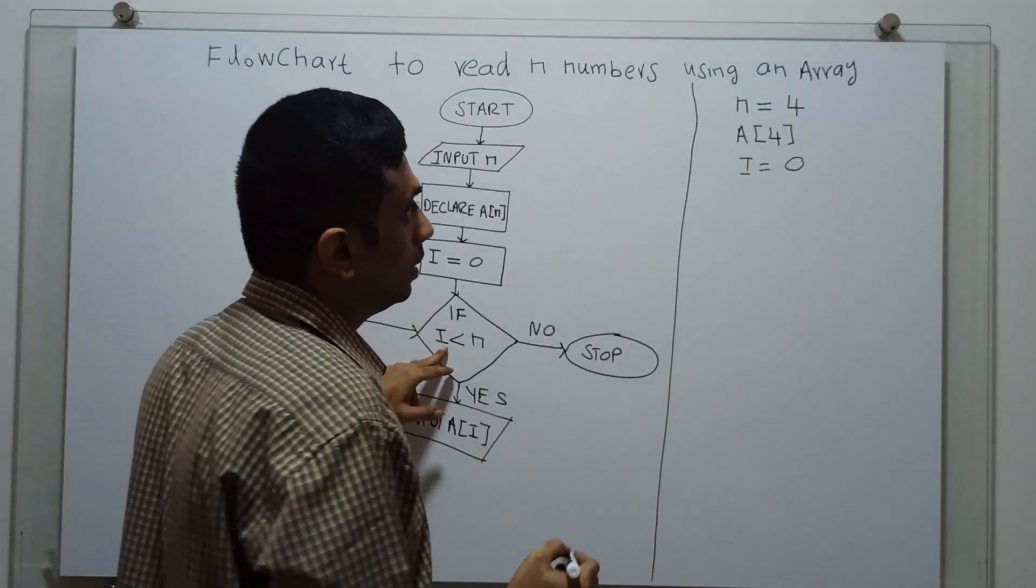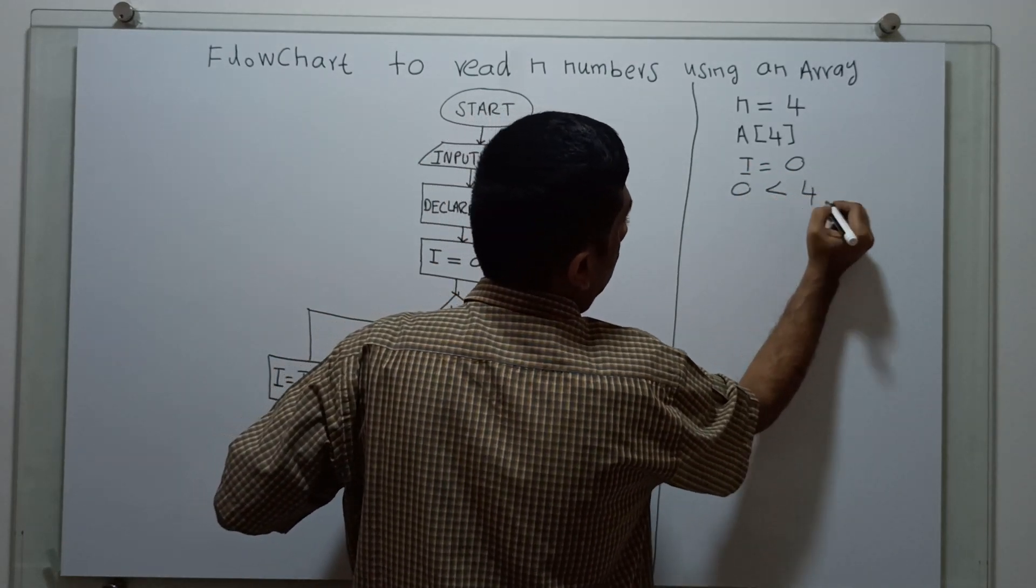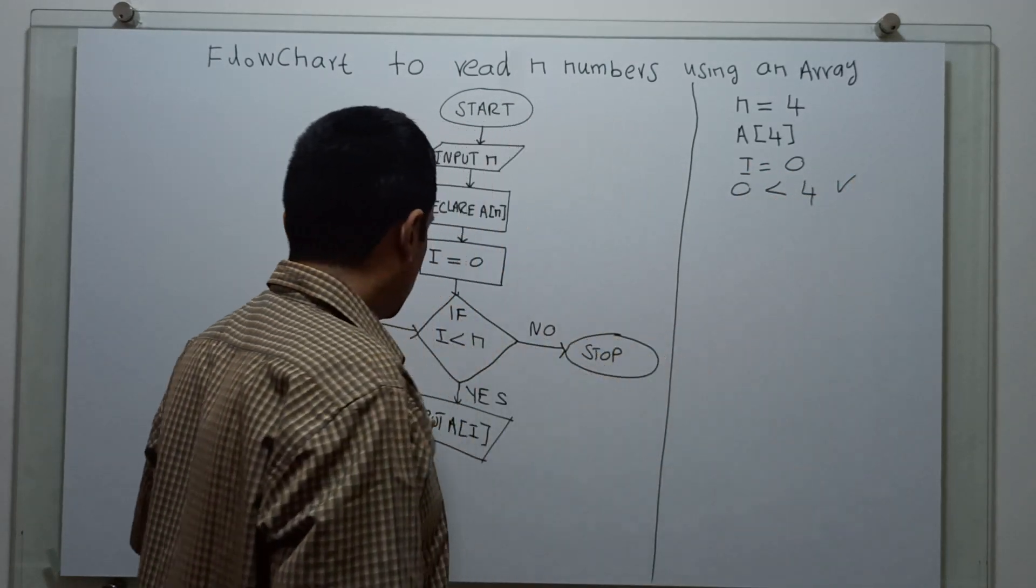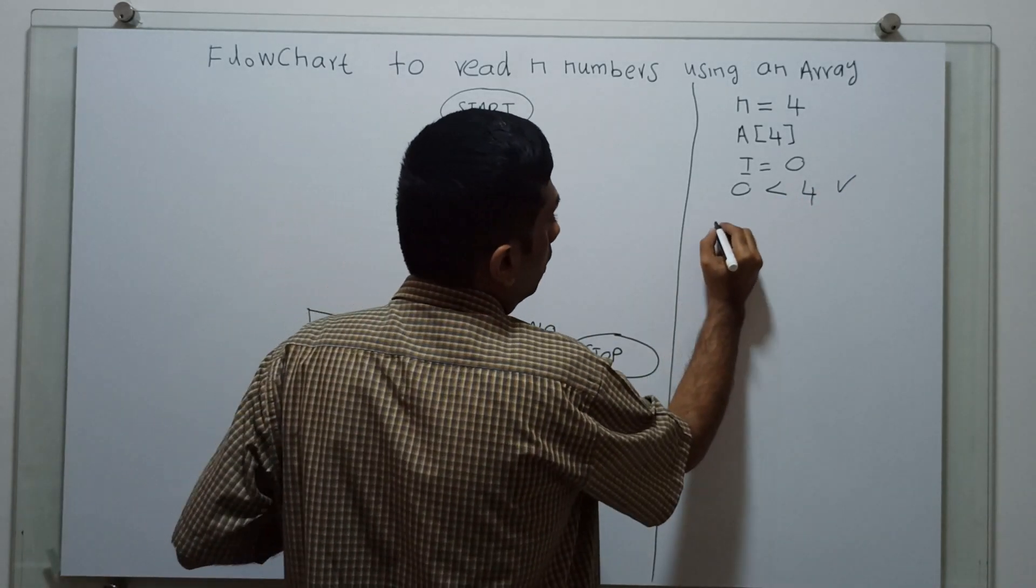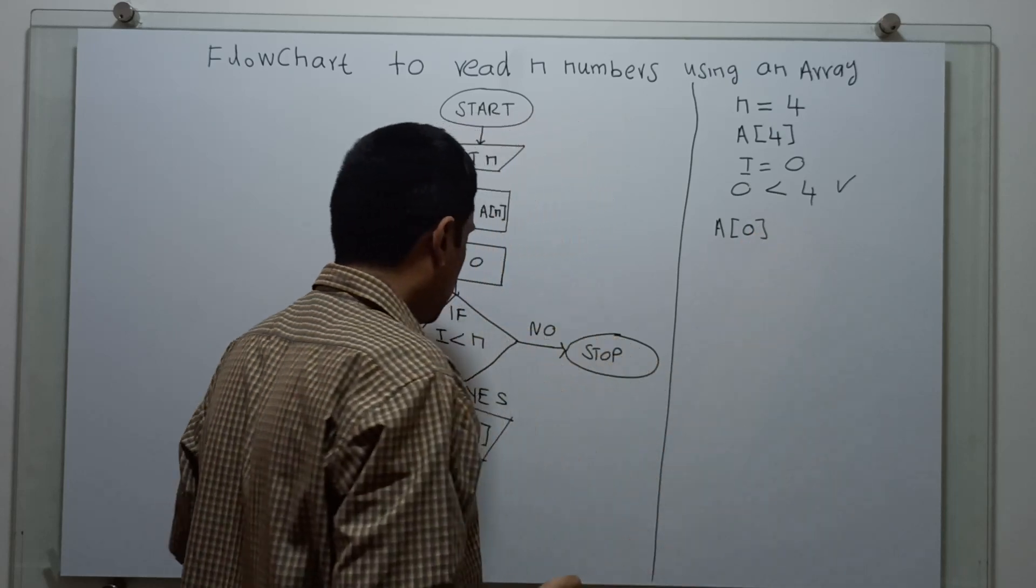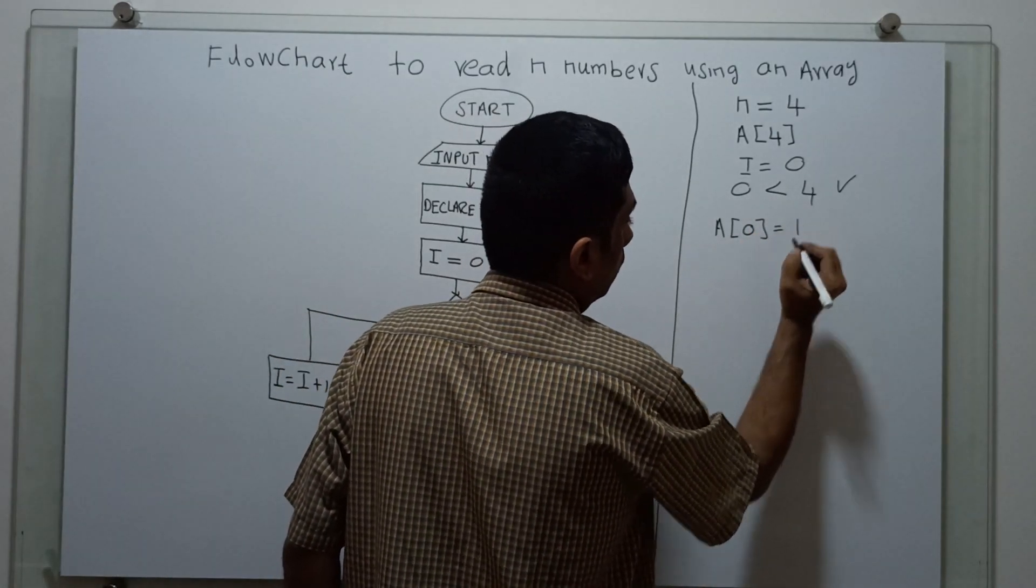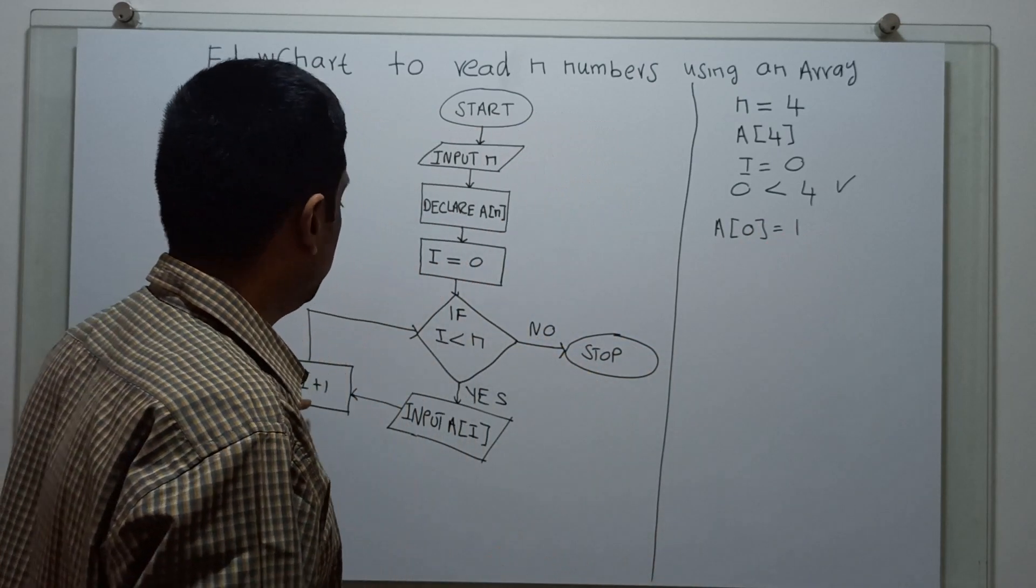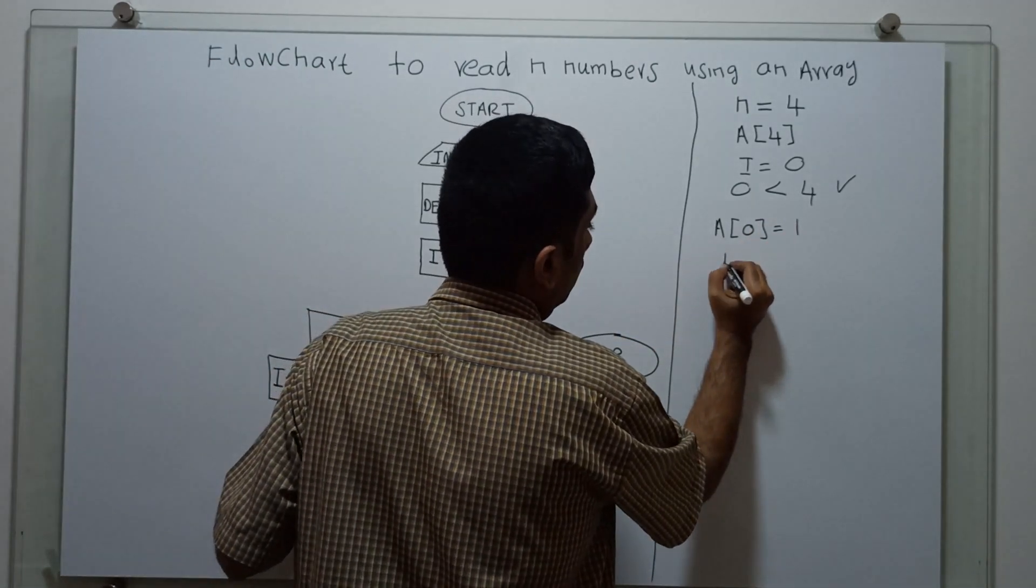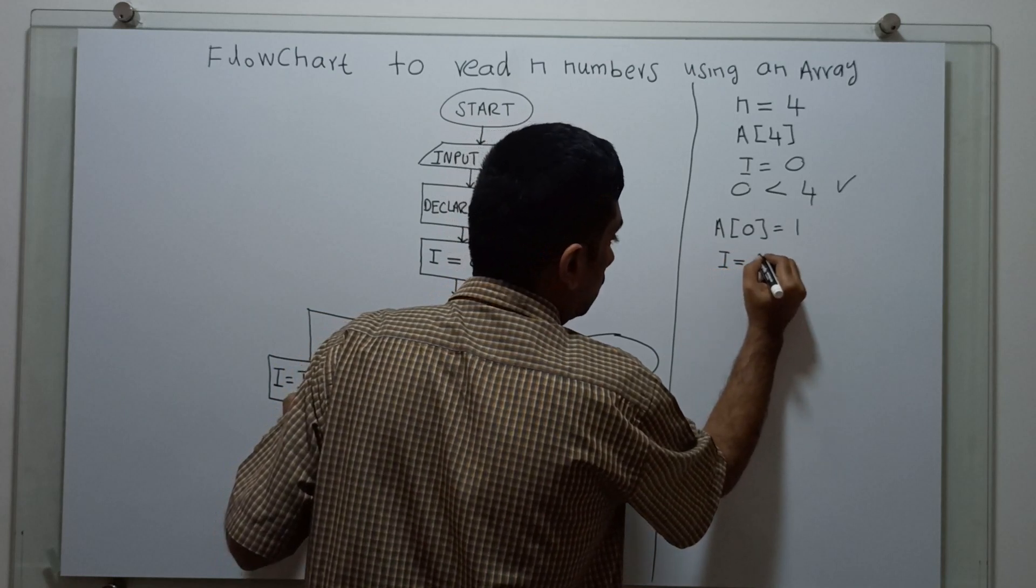I am checking i less than n. 0 less than 4. The condition is true. Then, input a of i. I am getting a value for a of 0. For example, I am assigning a 1. I am giving a of 0 equal to 1. Next, i equal to i plus 1. Now I equal to 1.